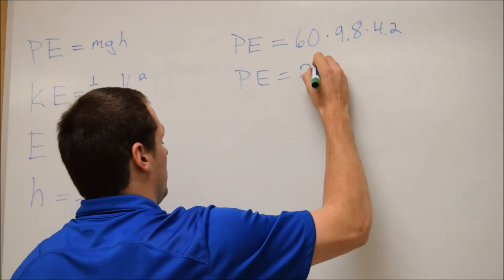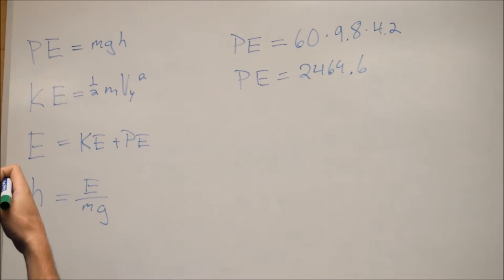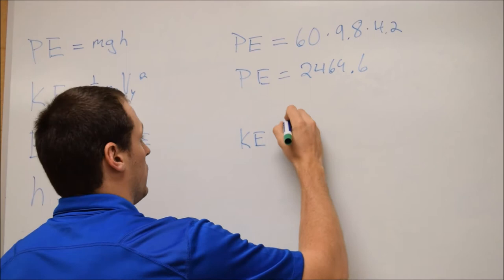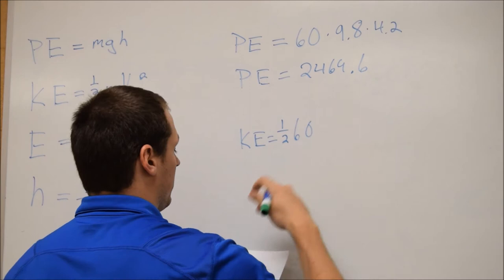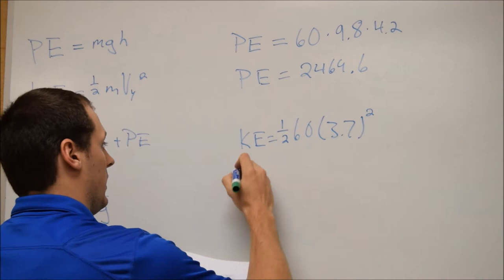So now we've got a potential energy, so we'll move on to kinetic energy, which is one-half times the mass which is 60 times the vy squared which is 3.7 squared. So insert math and we get 410.7.